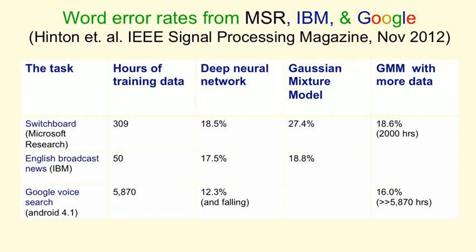Google fairly recently trained a deep neural network on a large amount of speech — 5,800 hours — which was still much less than they trained their Gaussian mixture model on. But even with much less data, it did a lot better than the technology they had before, reducing the error rate from 16% to 12.3%, and the error rate is still falling. In the latest Android, if you do voice search, it's using one of these deep neural networks to do very good speech recognition.